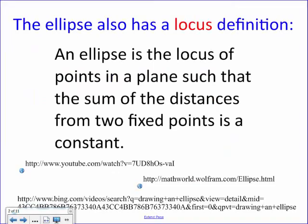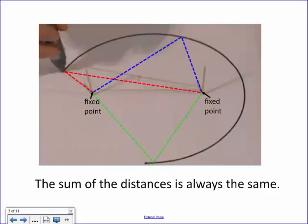Knowing that information, we're going to apply the locus of an ellipse. The locus of an ellipse is the set of points in a plane such that the sum of the distances from two fixed points is a constant. So let's break it down — I have an ellipse here with two fixed points drawn.